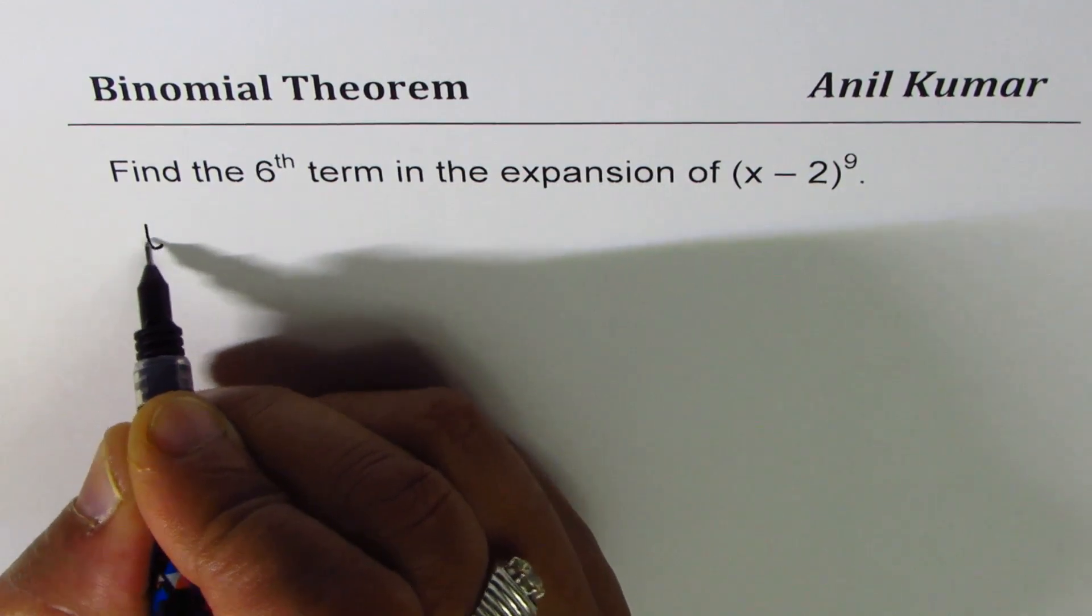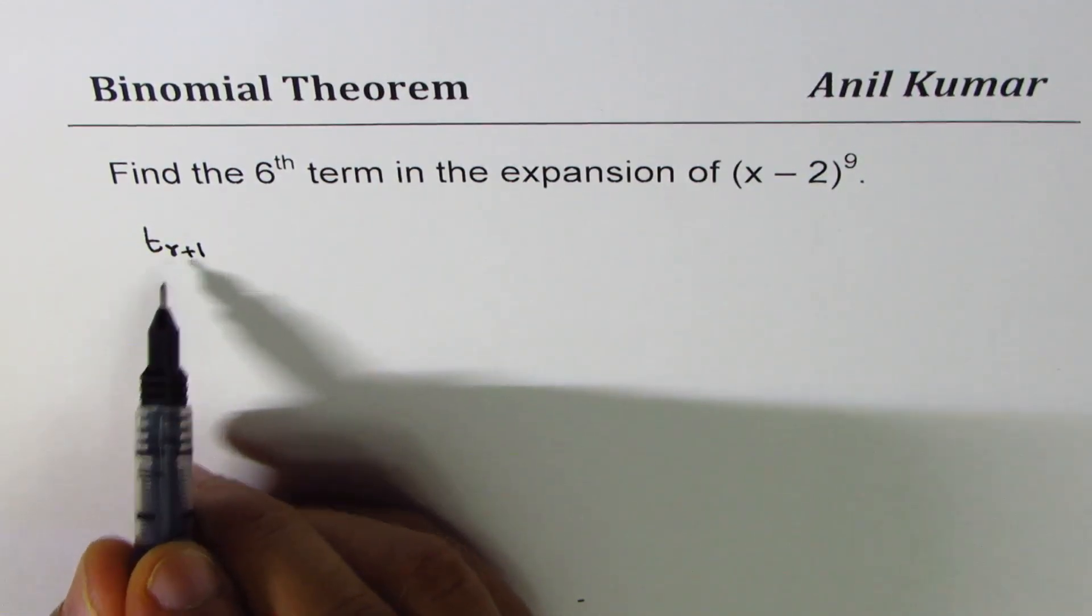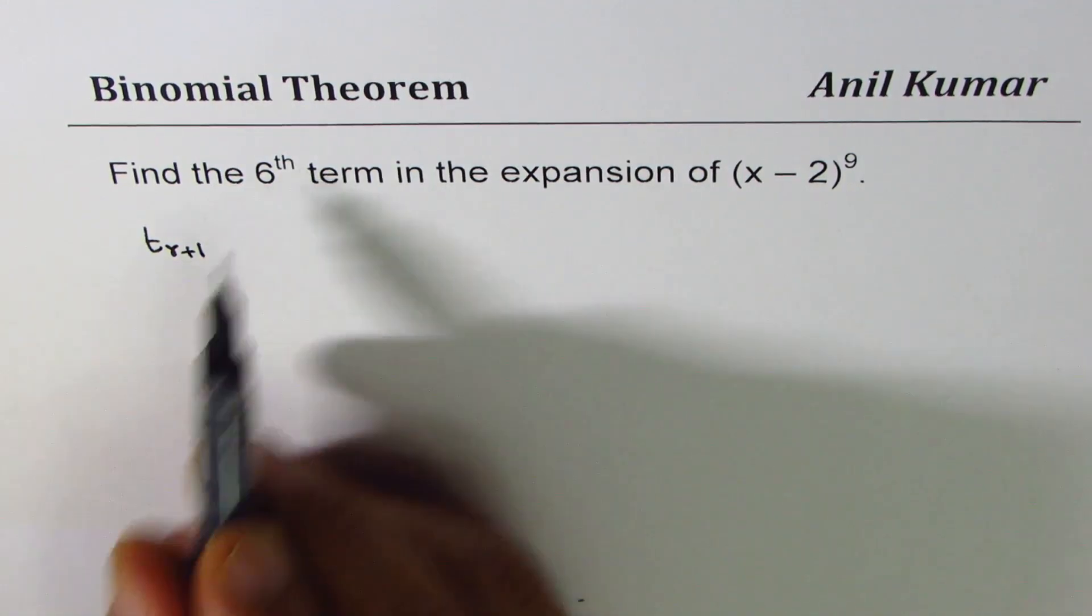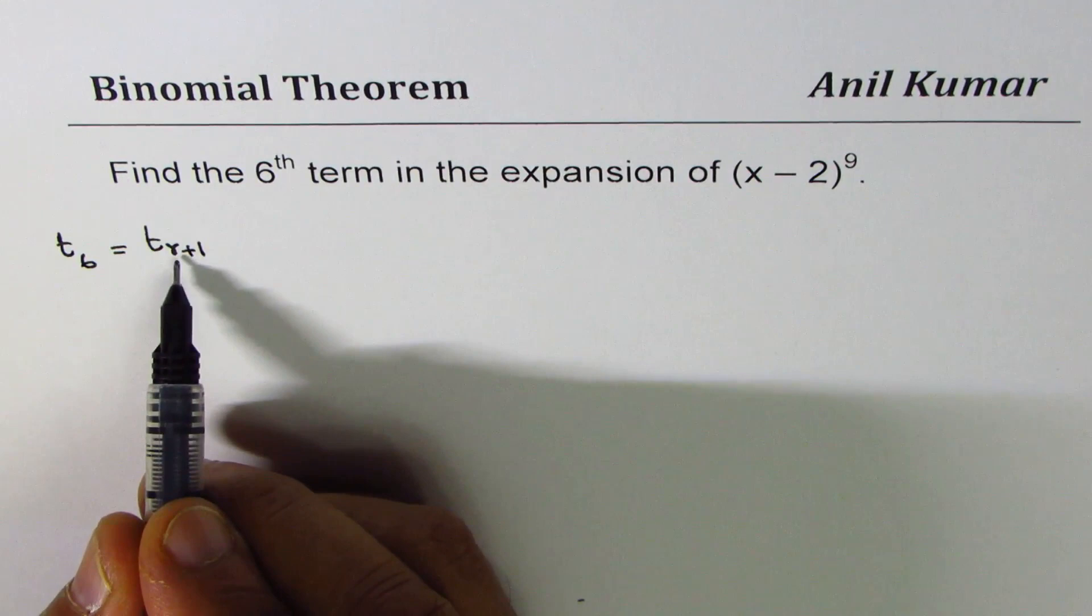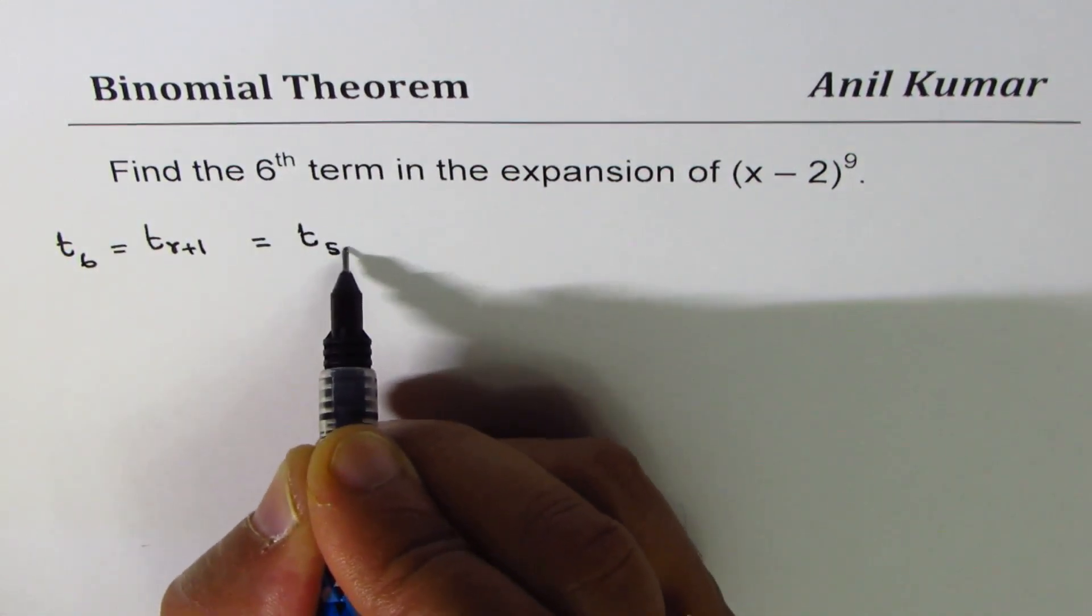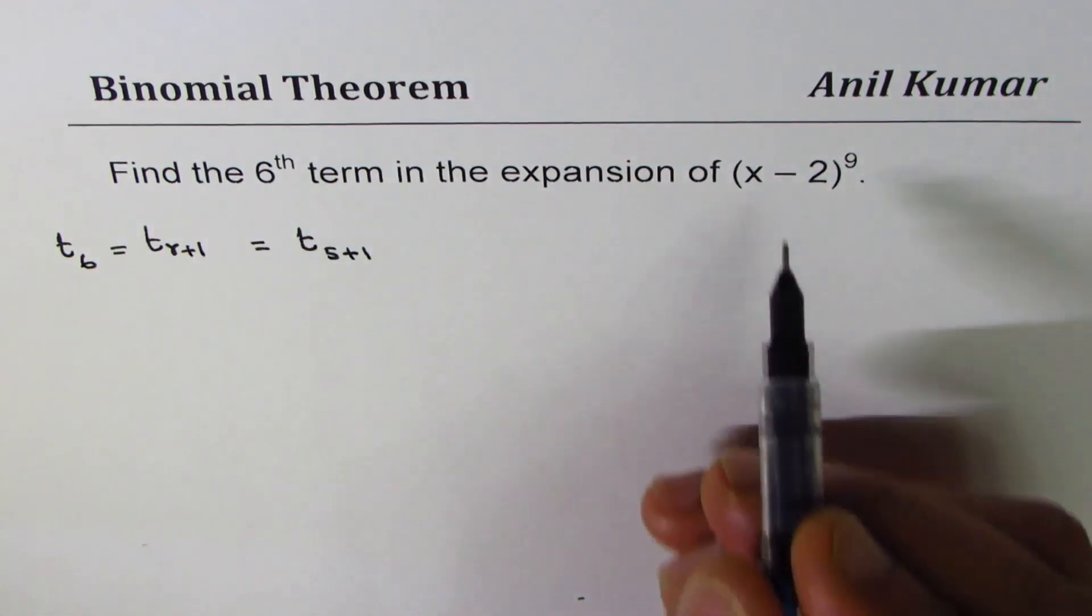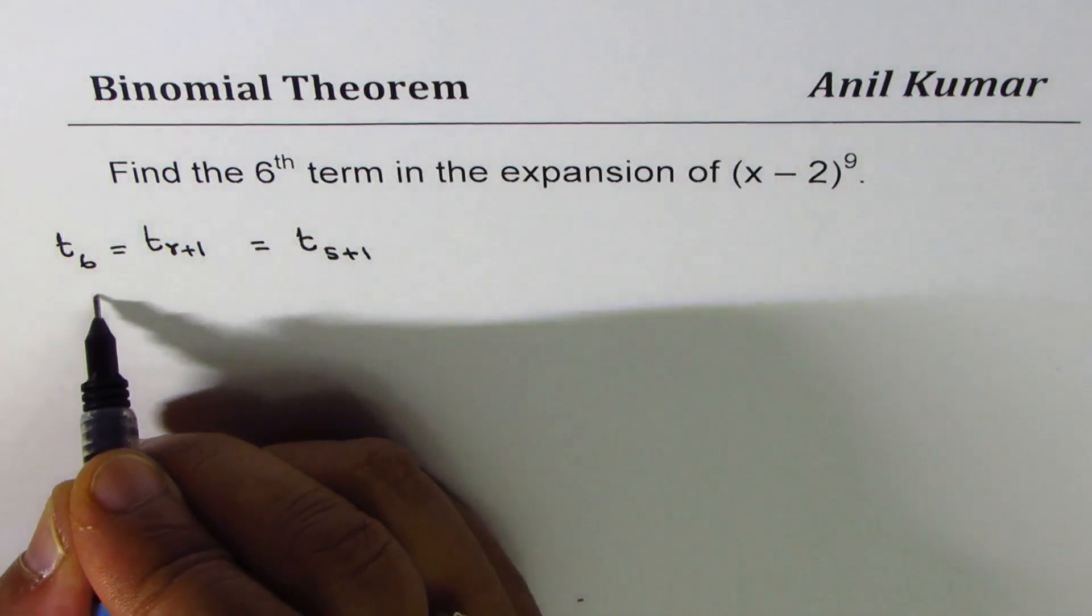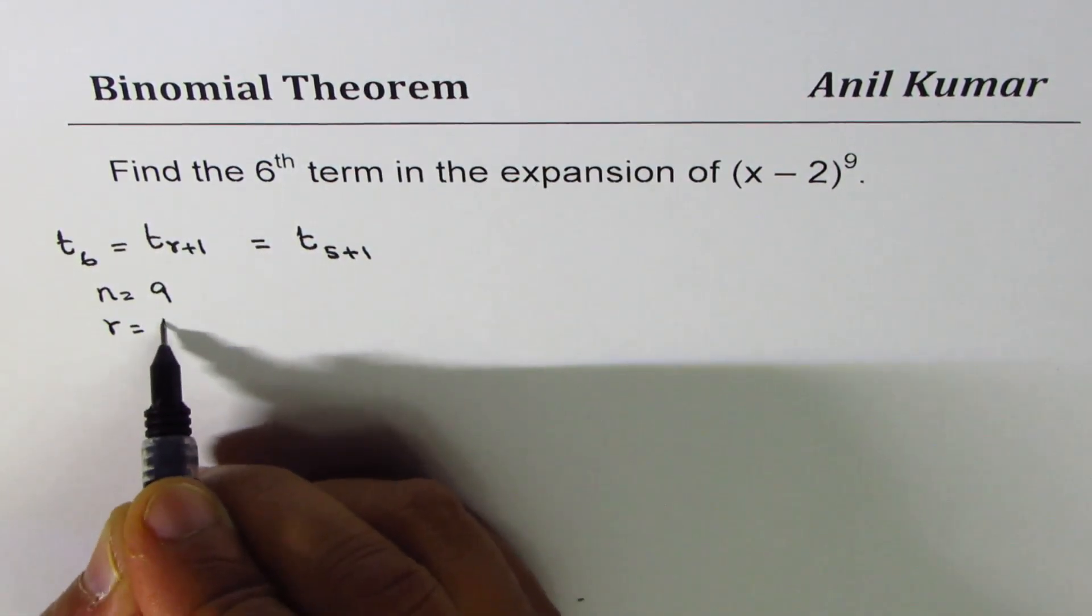Now the general formula is t r plus 1. It's very important to understand we are trying to find the sixth term. So what is r equals to? Clearly r is equal to 5, so we have 5 plus 1. So in our expansion we know n is equals to 9 and r is equals to 5.